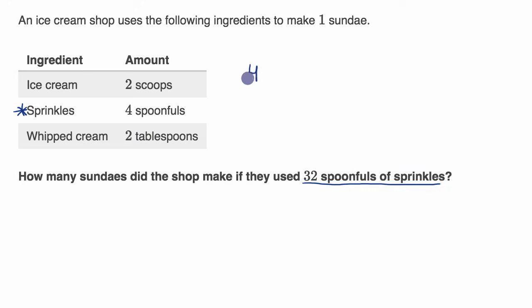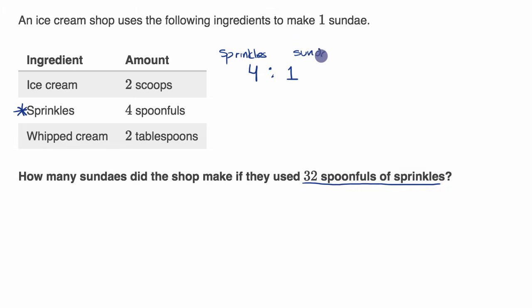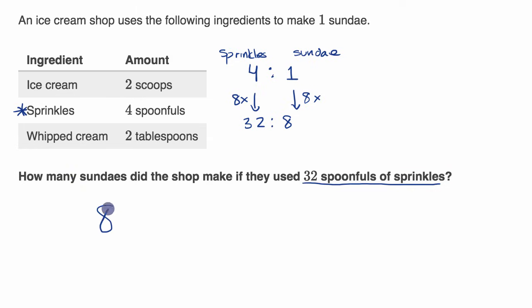The ratio of spoonfuls of sprinkles to sundaes is four to one — four spoonfuls per one sundae. But here we're talking about using 32 spoonfuls of sprinkles. That is eight times as many, so you're going to be able to create eight times as many sundaes. So you'll have 32 spoonfuls of sprinkles for every eight sundaes. How many sundaes did the shop make? They made eight.